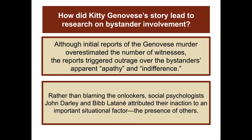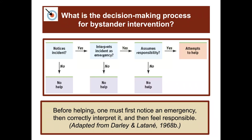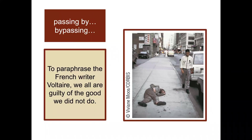How did the story of Kitty Genovese lead to research on bystander involvement? Although initial reports of the Genovese murder overestimated the number of witnesses, the reports triggered outrage over the bystanders' apparent apathy and indifference. Rather than blaming the onlookers, social psychologists John Darley and Bibb Latané attributed their inaction to an important situational factor: the presence of others. Before helping, one must first notice an emergency, then correctly interpret the emergency, and then have a sense of responsibility to help. To paraphrase Voltaire, we are all guilty of the good we did not do — we all sometimes pass by someone who might be in need of help.